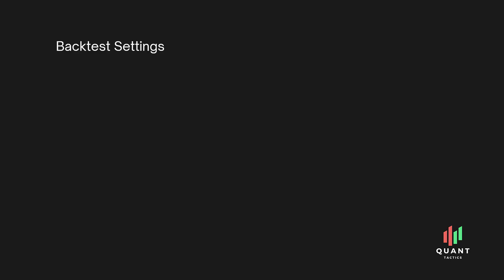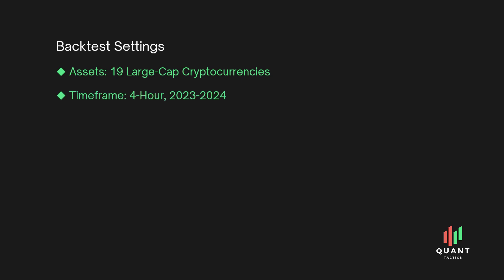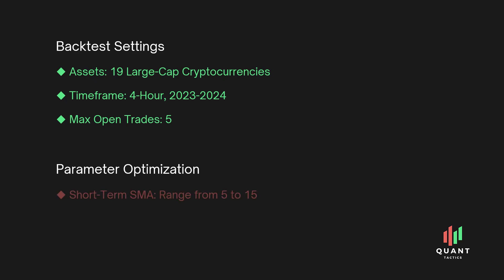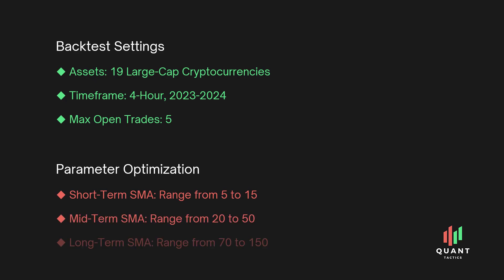Now that we understand how the strategy works, let's take a closer look at the backtest settings. We will use large-cap cryptocurrencies, which ensures we are testing the strategy on the most actively traded and liquid assets. The timeframe we are testing is four hours, and we will run the backtest over a one-year period. To manage our risk, we will limit the maximum number of open trades to five at any time. For the optimization process, we will fine-tune the following parameters: short-term moving average from 5 to 15, mid-term moving average from 20 to 50, and long-term moving average from 70 to 150. This gives us a total of 24,000 different test combinations.